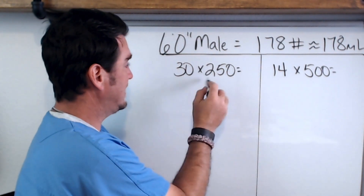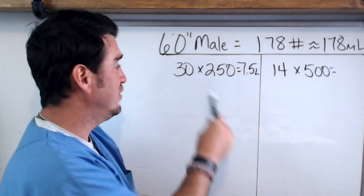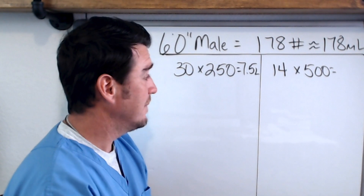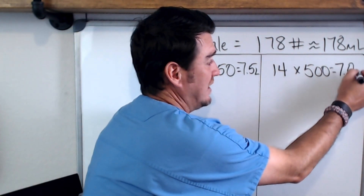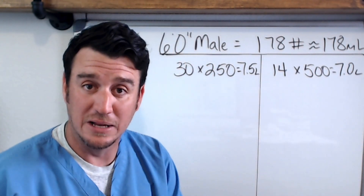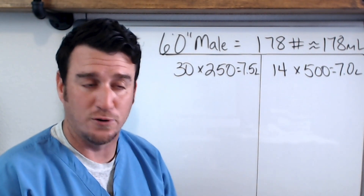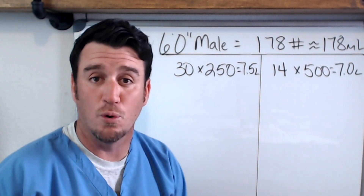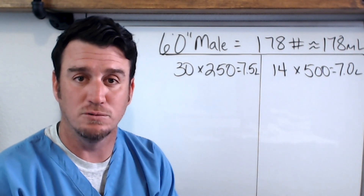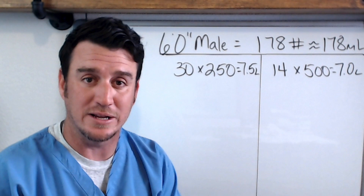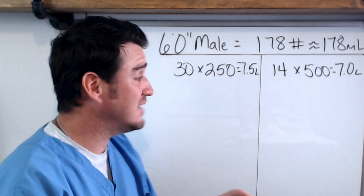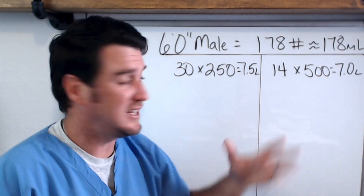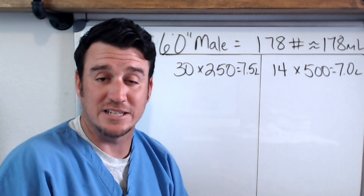For Patient A: 30 times 250 equals 7,500 milliliters, or 7.5 liters of minute ventilation. For Patient B: 14 times 500 equals 7,000 milliliters, or 7 liters of minute ventilation. The question is: if everything else is the same, which of these patients is more effectively removing CO2?